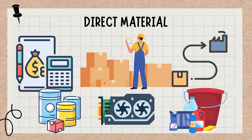For example, if a company makes furniture, the direct material costs would include the cost of wood, fabric, and other materials used to make the furniture. Labor costs and overhead costs are not considered direct material costs.